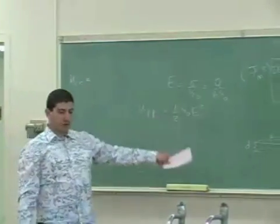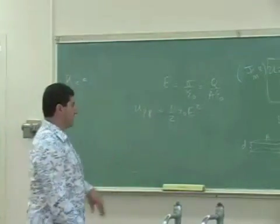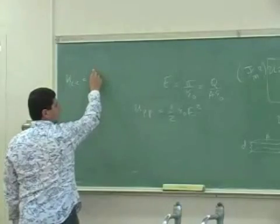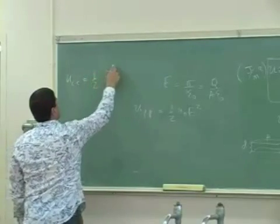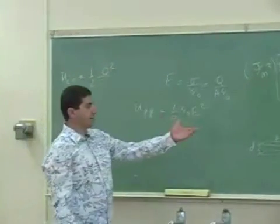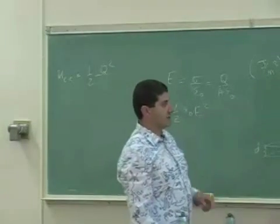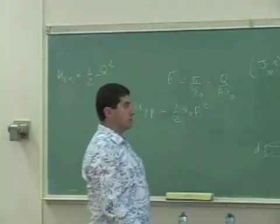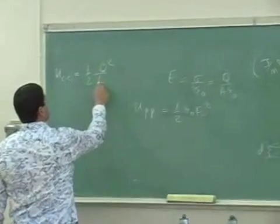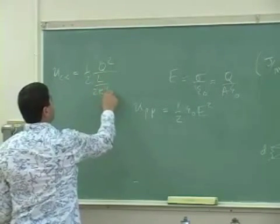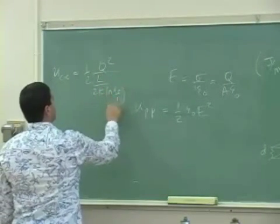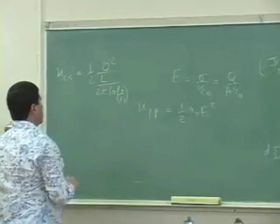For a cylindrical capacitor, if I go through the whole steps, I go half Q squared divided by its capacitance, so I would put the capacitance of a cylindrical L over 2k ln R2 over R1.